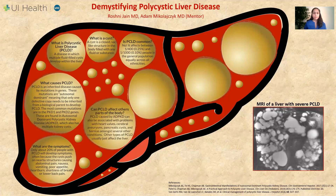Polycystic liver disease caused by autosomal dominant polycystic kidney disease can also be associated with problems outside of the liver, like issues with heart valves, brain aneurysms, pancreatic cysts, or hernias, amongst other conditions. Other types of polycystic liver disease affect just the liver.